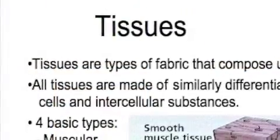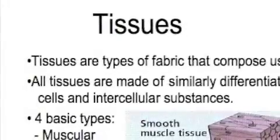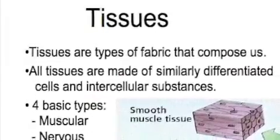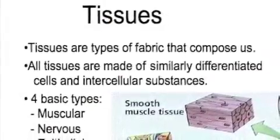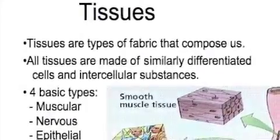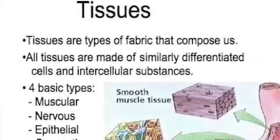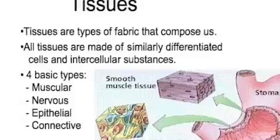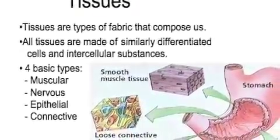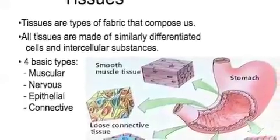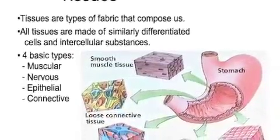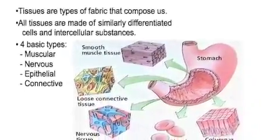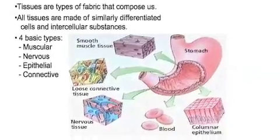Let's discuss our tissues — the types of fabric that make us up. We have four main types. They are made of similar cells as well as substances that they secrete. For example, bone is very hard; its main component is calcium salts, and it's the cells that secrete those calcium salts. We have four basic types of tissue: muscular tissue, nervous tissue, epithelial tissue, and connective tissue.